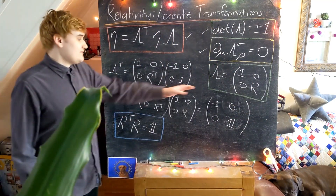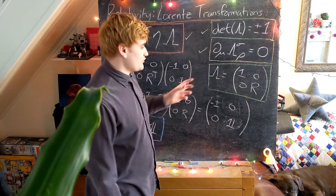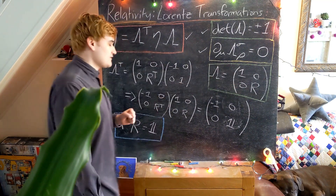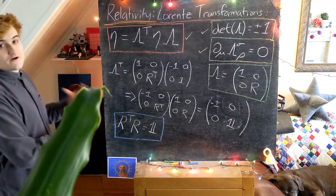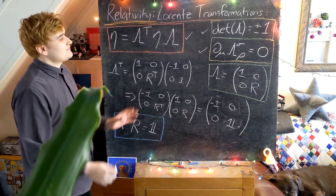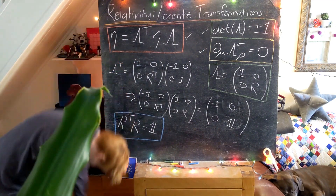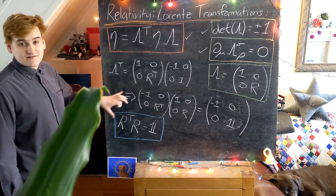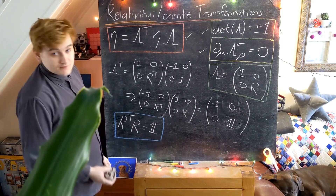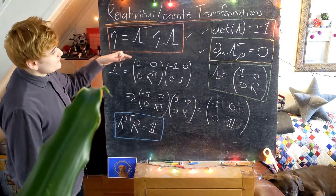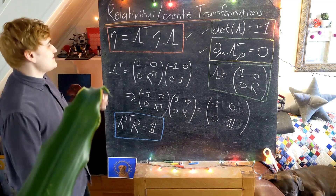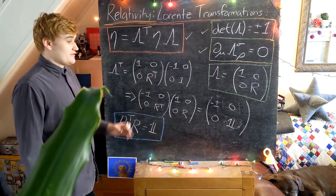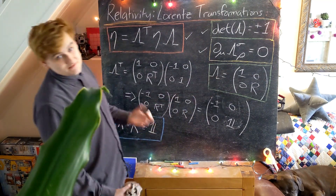We've checked all the required properties. A lambda matrix of this block form — with one on the time component and an SO(3) rotation matrix on the spatial block — is a Lorentz transformation. Any rotation of the space coordinates that leaves the time coordinate unaffected is a perfectly valid Lorentz transformation. We've taken a transformation we already knew and proved it satisfies all the properties needed to be a Lorentz transformation.